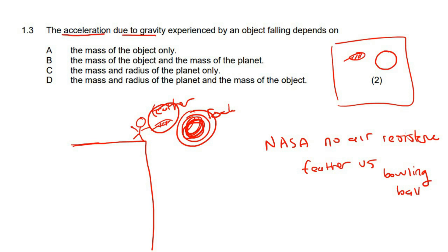Let's go see. The acceleration due to gravity depends on? No, it's not the mass of the object. It is C. It is only because of the mass and the radius of the planet.